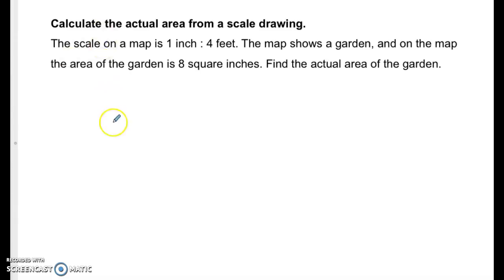Now we have 1 inch to 4 feet but then we're talking about 8 square inches, so our units don't line up because we have inches and square inches. So before we set up our ratio we have to change our 1 inch to 4 feet into square inches and square feet. So we can do that by squaring them. 1 squared is equal to 1 and 4 squared is equal to 16.